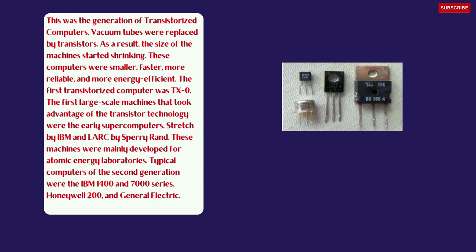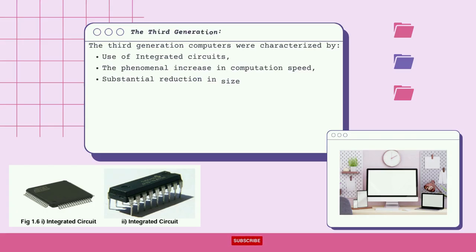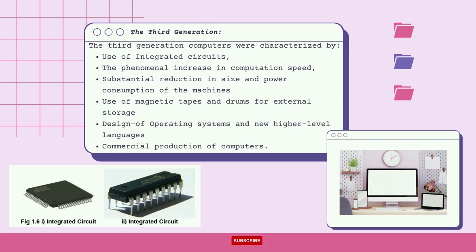The third generation computers were characterized by the use of integrated circuits, a phenomenal increase in computation speed, and a substantial reduction in size and power consumption of the machines. They also saw the use of magnetic tapes and drums for external storage, and the design of operating systems and new higher-level languages.